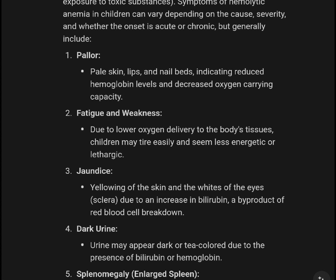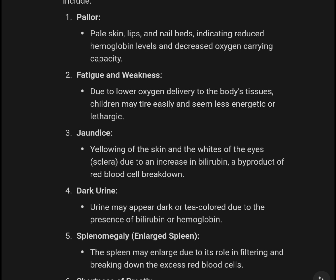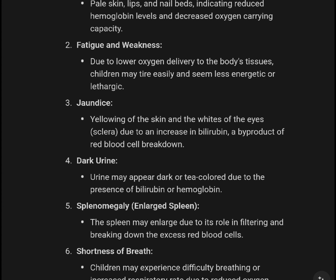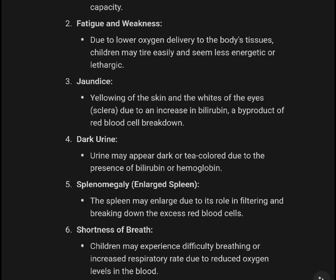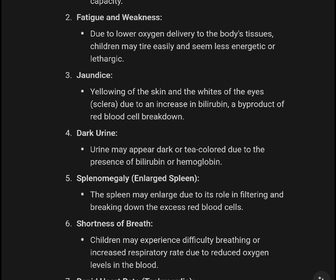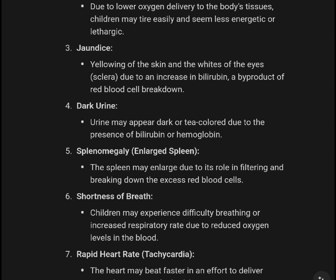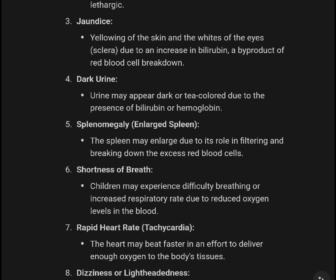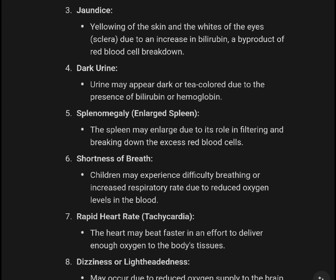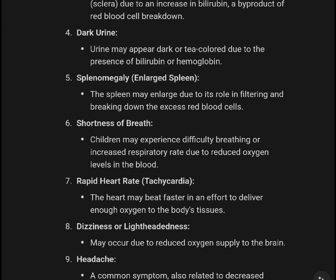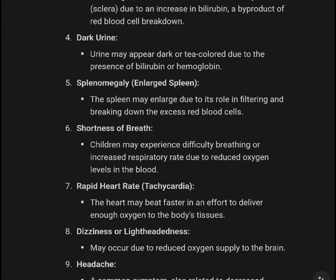Symptoms of hemolytic anemia in children can vary depending on the cause and severity, and whether the onset is acute or chronic, but generally include pallor — pale skin, lips, and nail beds — indicating reduced hemoglobin levels and decreased oxygen-carrying capacity. Fatigue and weakness occur due to lower oxygen delivery to the body's tissues; children may tire easily and seem less energetic. Jaundice, a yellowing of the skin and whites of the eyes, occurs due to an increase in bilirubin, a byproduct of red blood cell breakdown.